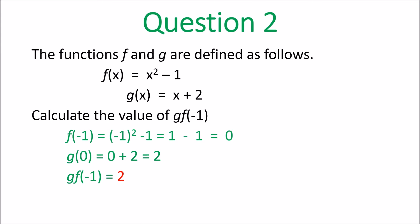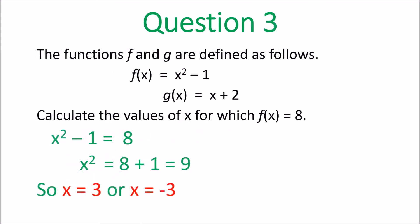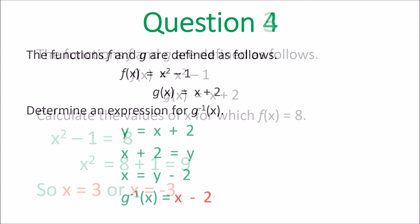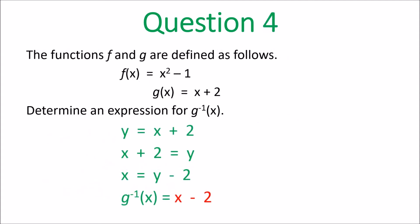Question 3: calculate the values of x for which f of x equals 8. Set x squared minus 1 equal to 8, so x squared equals 9. The square root of 9 is 3, but it could be 3 or negative 3 because 3×3=9 and (-3)×(-3)=9. So x equals 3 or x equals negative 3. Remember, when dealing with a square root that gives a whole number, expect two answers.